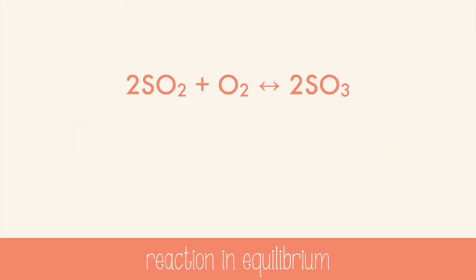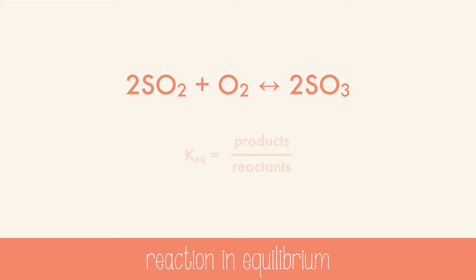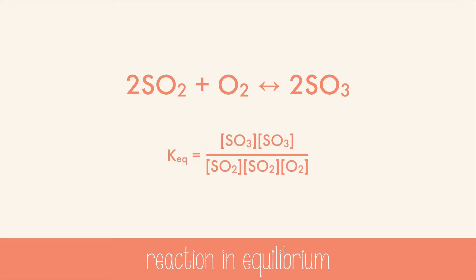When a reaction reaches equilibrium, it's interesting to find out if there are more products or more reactants, and we can do that. The basic formula for the equilibrium constant, or KEQ, is products over reactants. But we want to compare concentrations, so we'll use brackets to represent concentration, and actually write in the chemicals as many times as their coefficient.